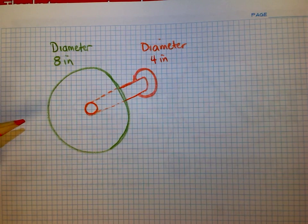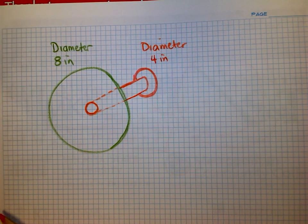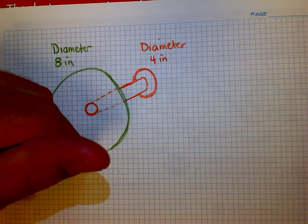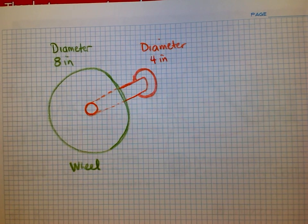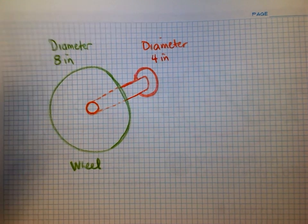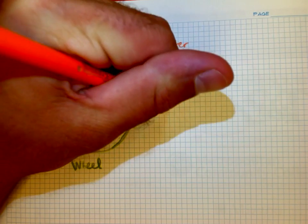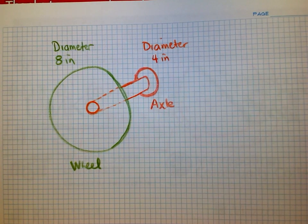One is going to be the wheel and the other is going to be the axle and the difference between the two, the wheel is the bigger of the two. So the wheel in this case would be the thing that's green because it has a diameter of 8 inches and over here the axle is the smaller thing because it has a diameter of 4.